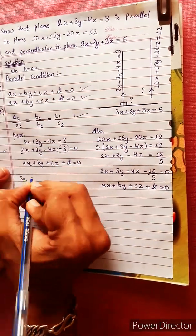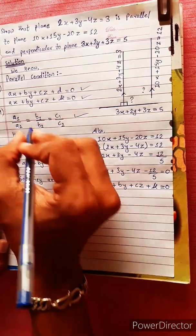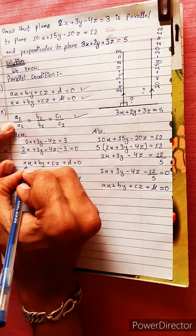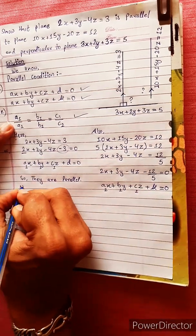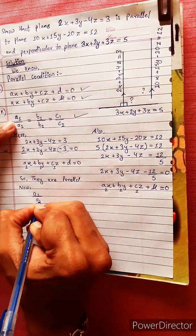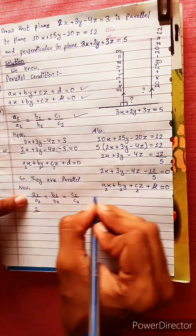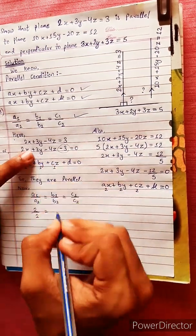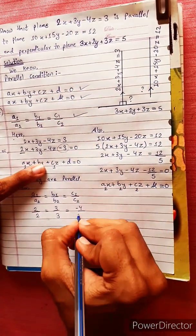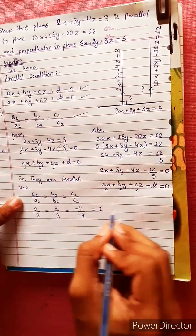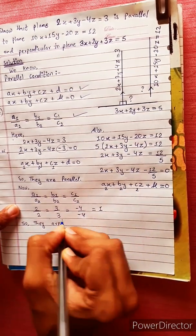So they are parallel — so they are parallel. Verifying: A1 by A2 equals B1 by B2 equals C1 by C2. A1 equals 2, A2 equals 2, B1 equals 3, B2 equals 3, C1 equals minus 4, C2 equals minus 4. Therefore the planes are parallel.